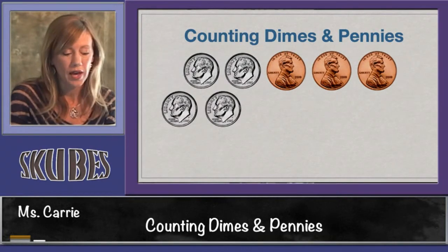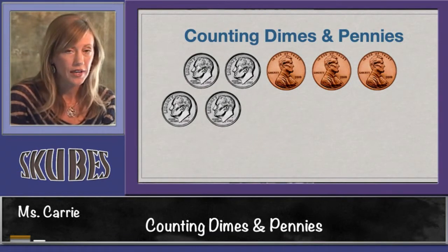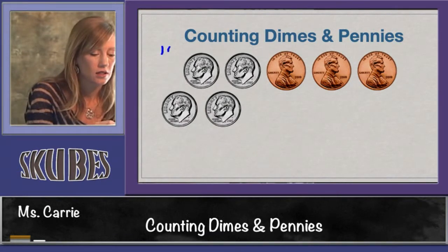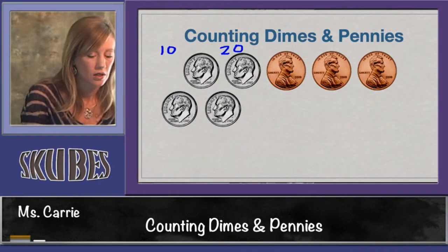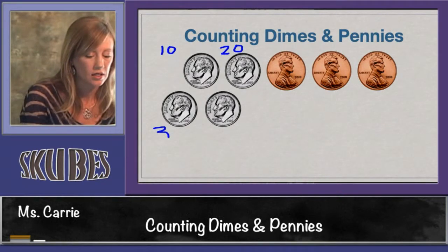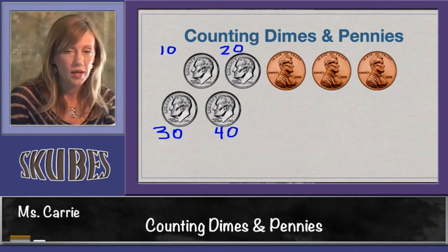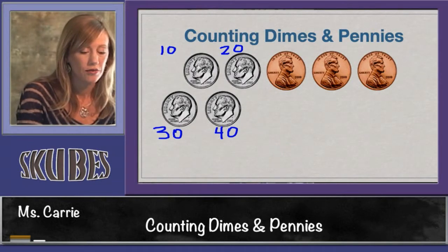Let's try counting another group of coins. In this group we have four dimes and three pennies. Let's start off counting by tens: ten, twenty, thirty, forty. We're done with our dimes, so we need to switch to counting by ones: forty-one.